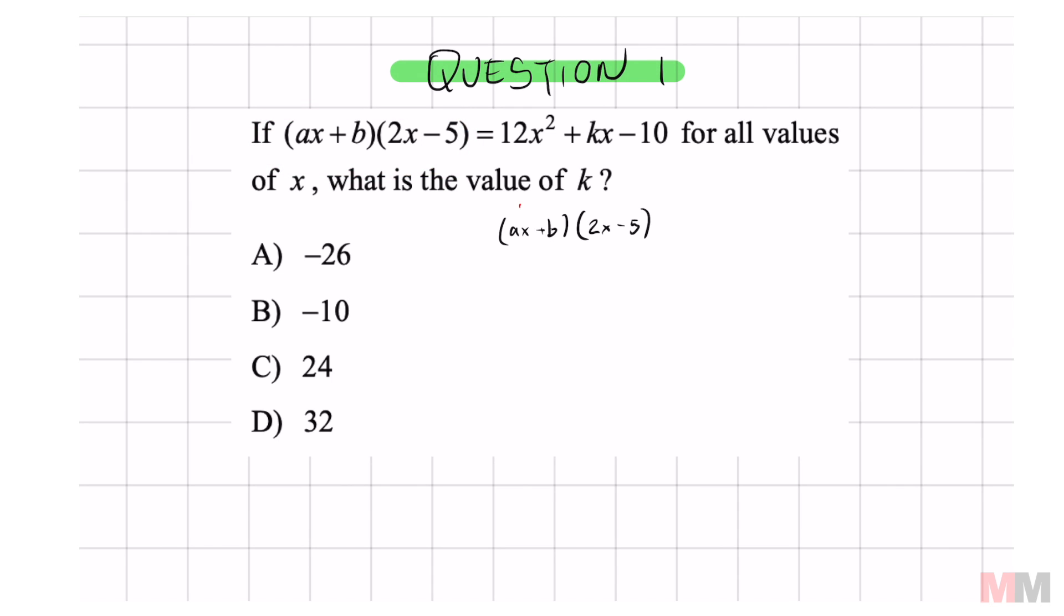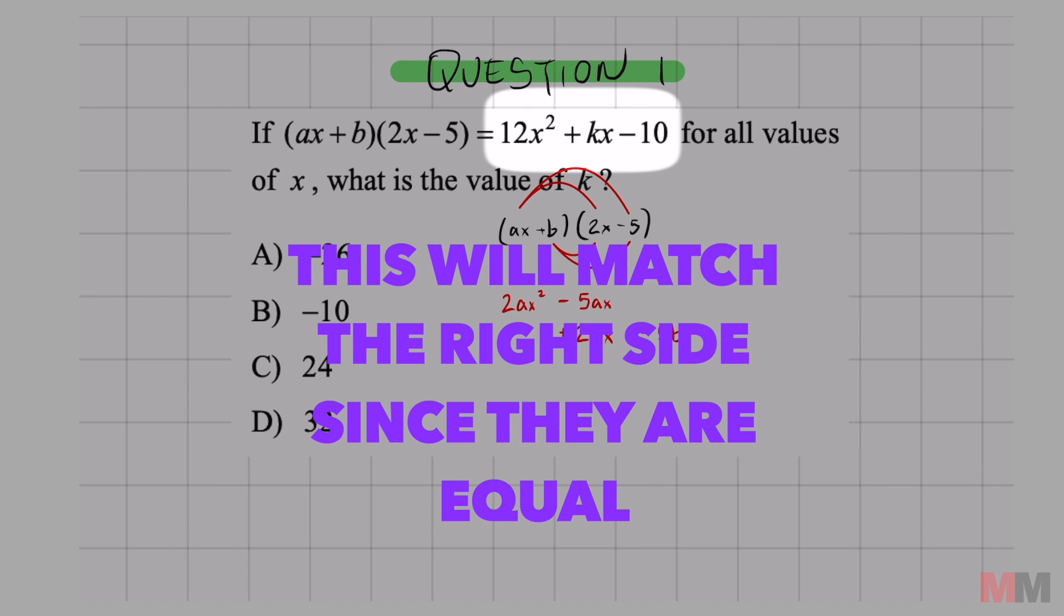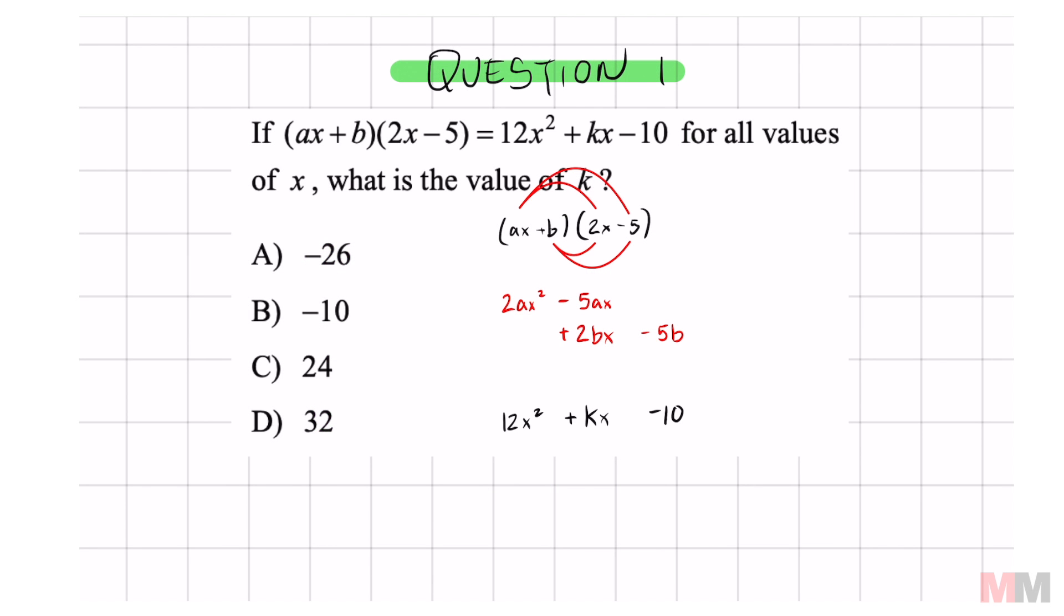If I distribute the first part, I get AX times 2X which is 2AX squared. Then I go to AX times negative 5 which is negative 5AX. Then I go down to B. B times 2X is positive 2BX and I'm putting it right here because we're going to end up combining what those are once we find A and B. So we're going to end up combining those like terms but for now they're not like terms. And B times negative 5 is negative 5B.